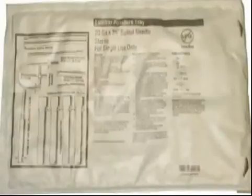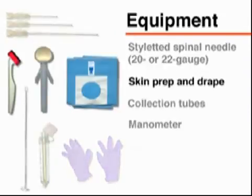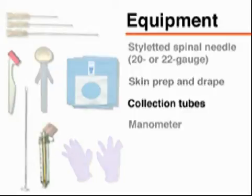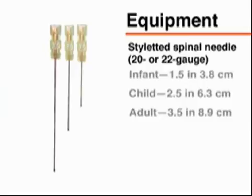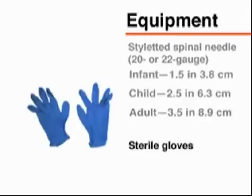Before performing the lumbar puncture, you will need a commercially available tray containing the necessary supplies: a spinal needle with a stylet, equipment for skin preparation, drapes, collection tubes, and in some cases a manometer. Typically, a 20 to 22 gauge needle is used, with the length ranging from 1.5 inches or 3.8 centimeters for infants, to 2.5 inches or 6.3 centimeters for children, and 3.5 inches or 8.9 centimeters for adults. You will also need sterile gloves.